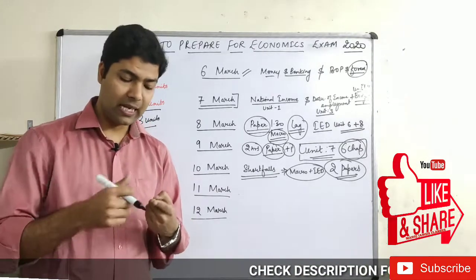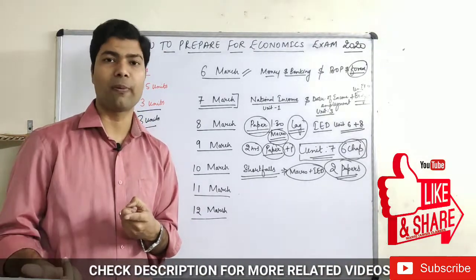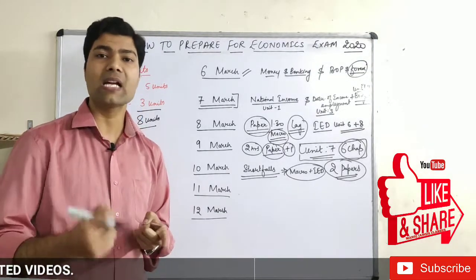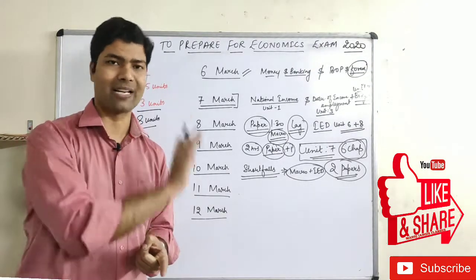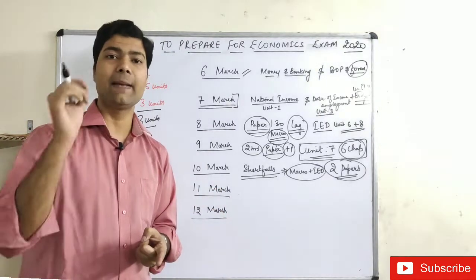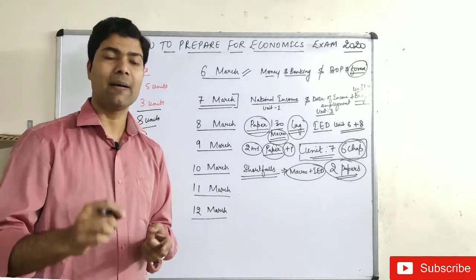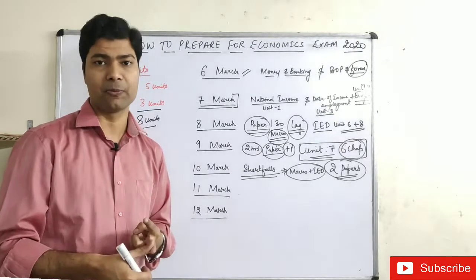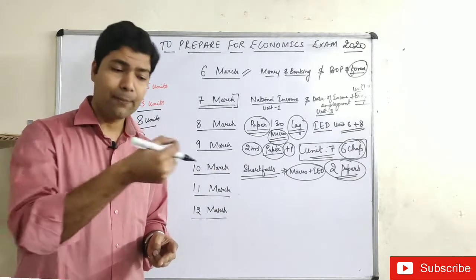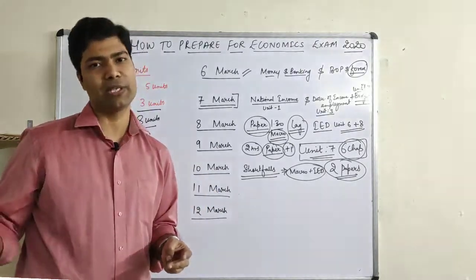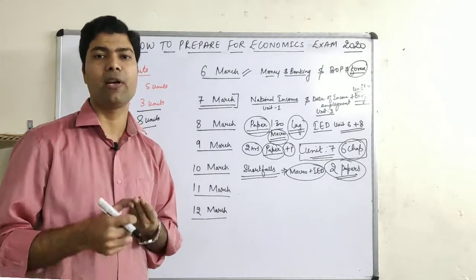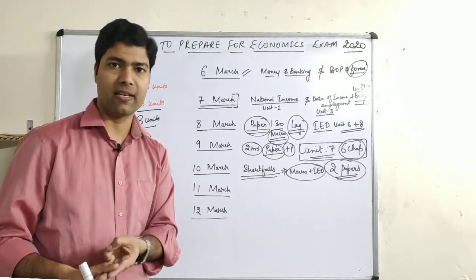Now one very important observation: the psychology paper this year had not a single MCQ — there were OTQ-type questions of other varieties, but not a single MCQ. Questions were picked from every single line of the book. The same thing was observed in today's 6th March political science paper.